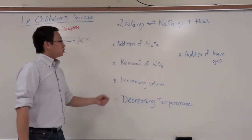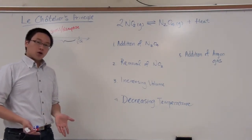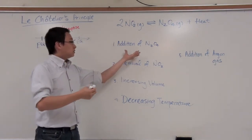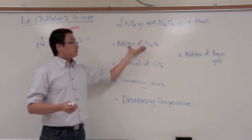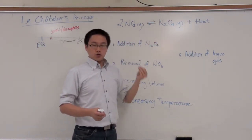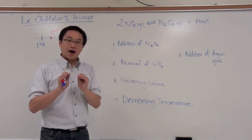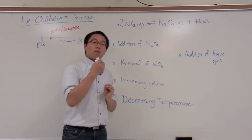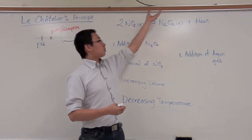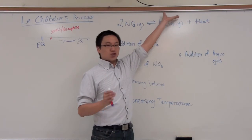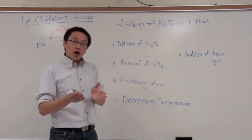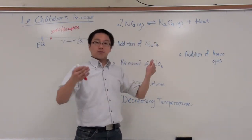So let's look at the addition of N2O4. So again, this is the stress, the disruption done to the equilibrium process. So now you have extra N2O4, and it is now not at equilibrium. So to go back to equilibrium, what needs to be done? Well, you have extra N2O4. That's too much. So in order to get back to equilibrium, the concentration of the N2O4 must be lower.